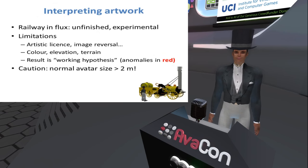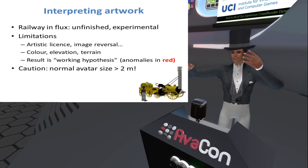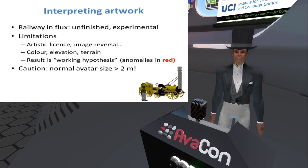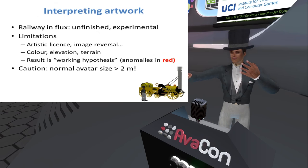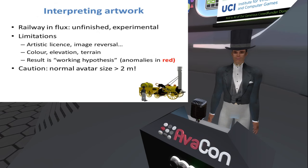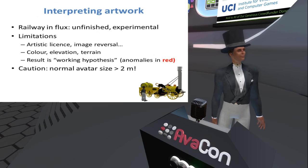I have tried to stay as far as possible to real-world dimensions. This becomes difficult when you're talking about buildings, because the normal avatar size — and we so easily forget this — is way in advance of two metres. As a consequence, with buildings the elevation is a little bit stretched, but when it comes to the actual railway and the locomotives and carriages, these are relatively built to scale. I actually operate with a reduced-size avatar.